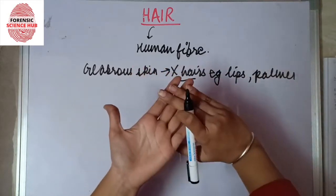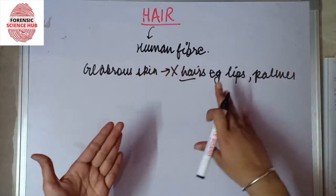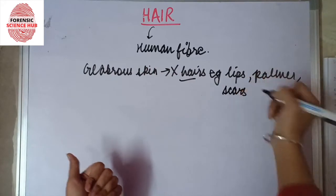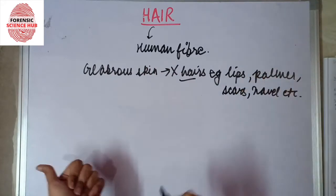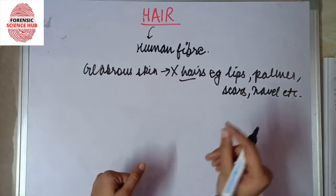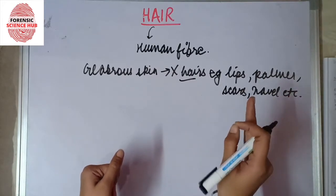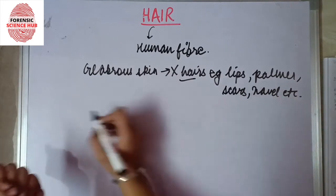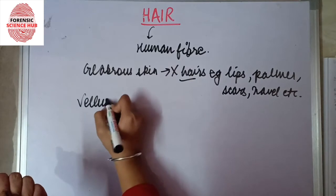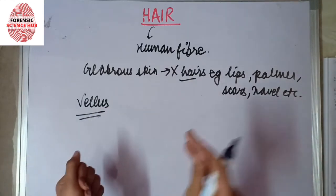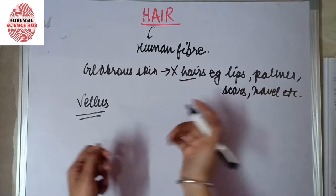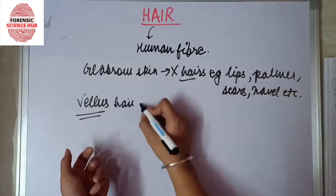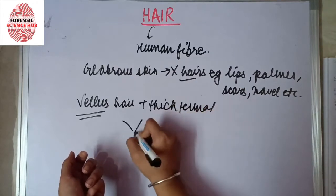The rest of our body is covered with hair. It can be thick terminal hair, or it can be fine hairs known as vellus hair — the tiny hair found on certain areas of our body. These are the two types of hair present on our body surfaces.